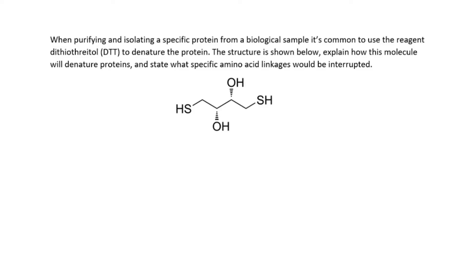Today we're going to look at this question. When purifying and isolating a specific protein from a biological sample, it's common to use the reagent DTT to denature the protein. The structure is shown below. Explain how this molecule will denature proteins and state what specific amino acid linkages would be interrupted.